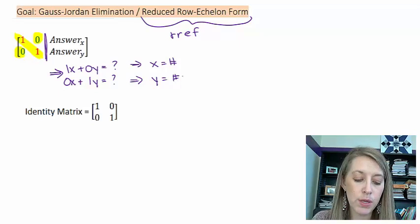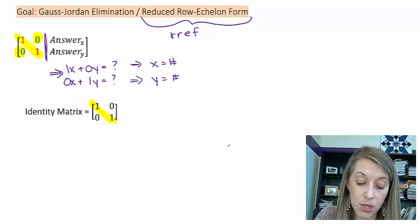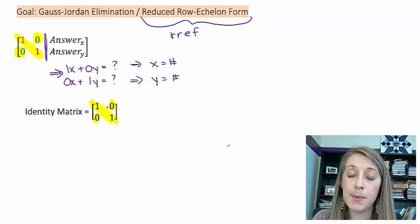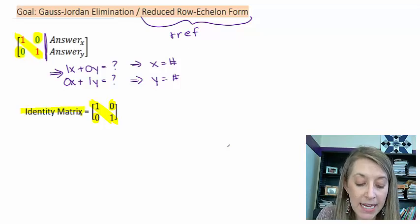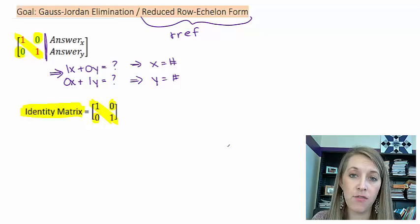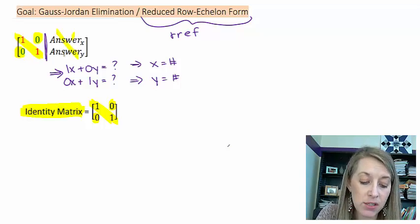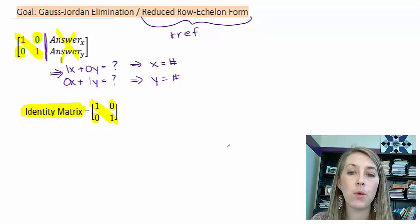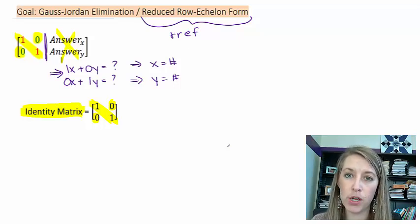Notice what we see over here on the left with the ones on the diagonal and zeros every other place. This has a specific name. This is called the identity matrix. So our goal is to get that identity matrix on the left. If we have that, then we have our answers over here on the right, and we don't have to do any other finagling with the systems of equations.